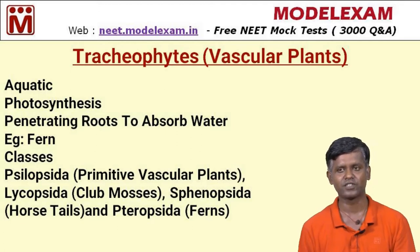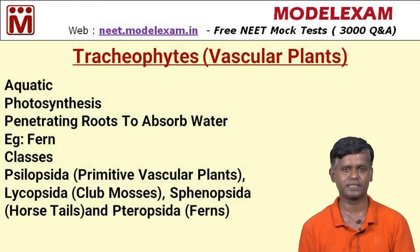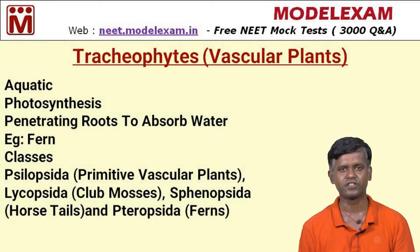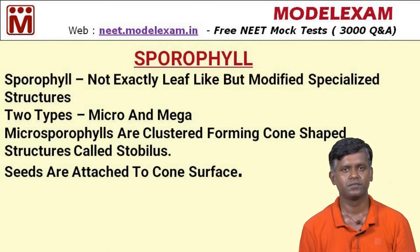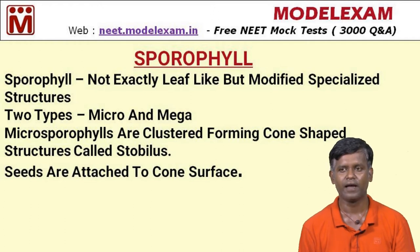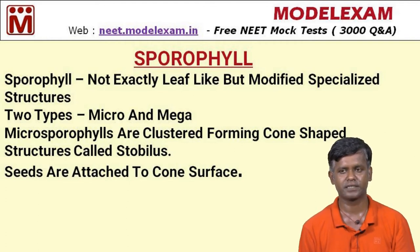Classes of tracheophytes include: Psilopsida (primitive vascular plants), Lycopsida (club mosses), Sphenopsida (horsetail plants), and Pteropsida (ferns). Sporophylls are not exactly leaf-like structures but modified specialized structures with two types: microsporophylls and megasporophylls. Microsporophylls are clustered to form cone-shaped structures called strobili, and seeds are attached to the cone surface.